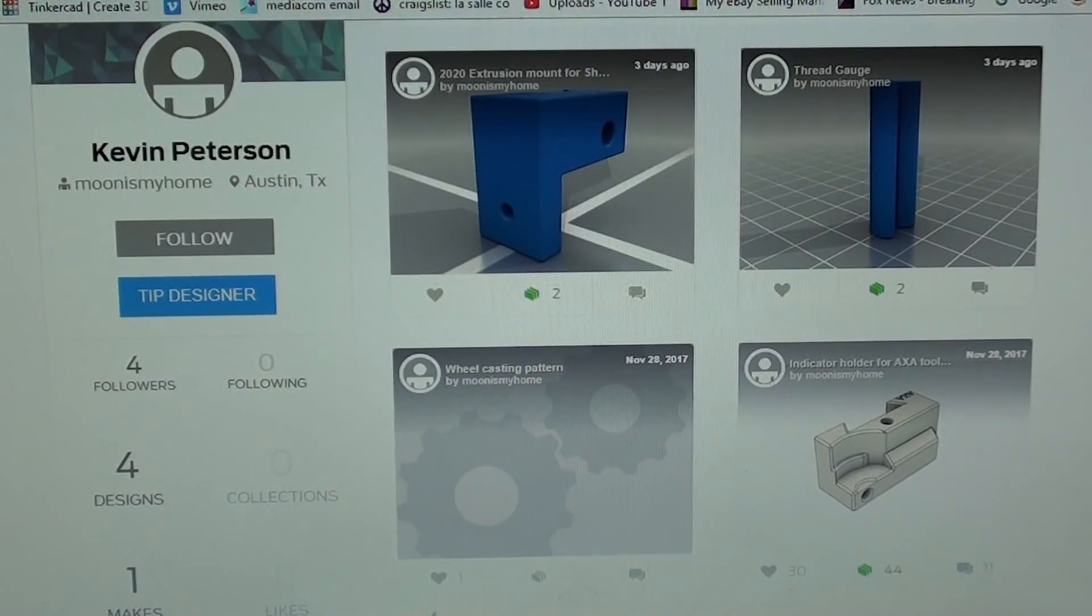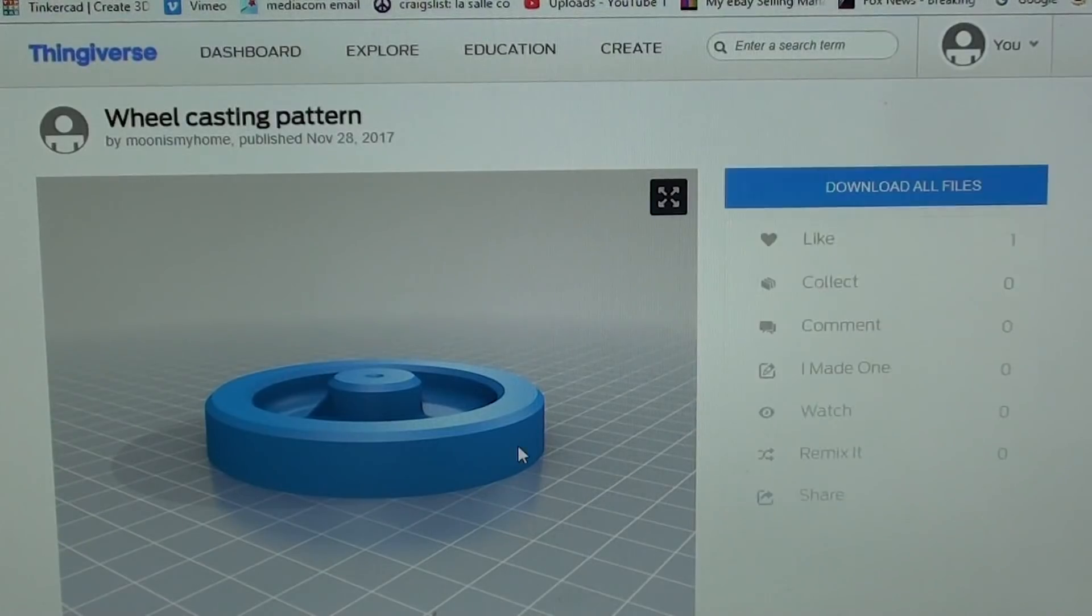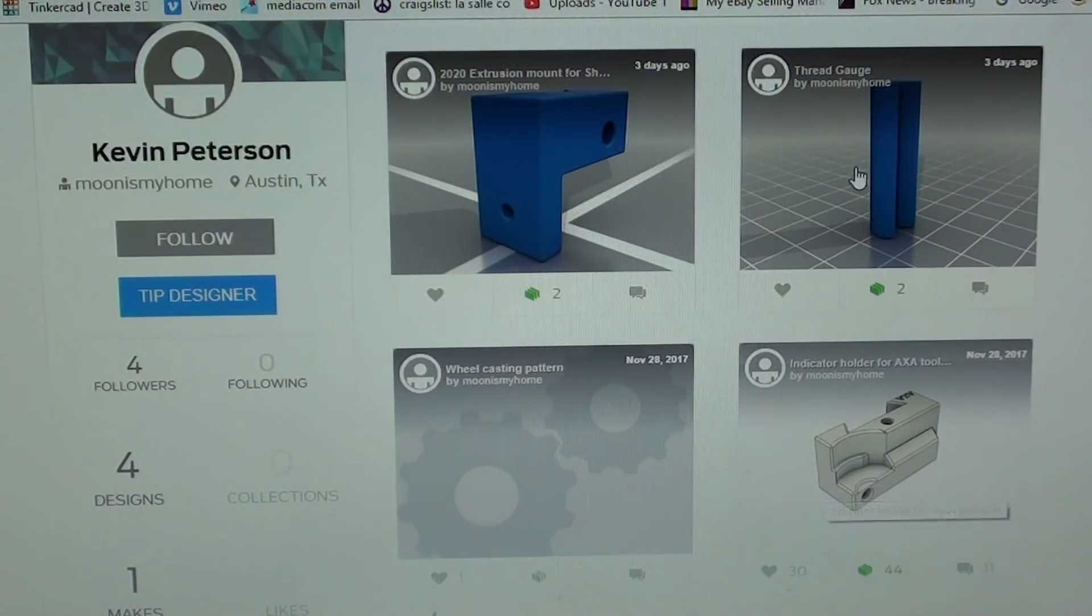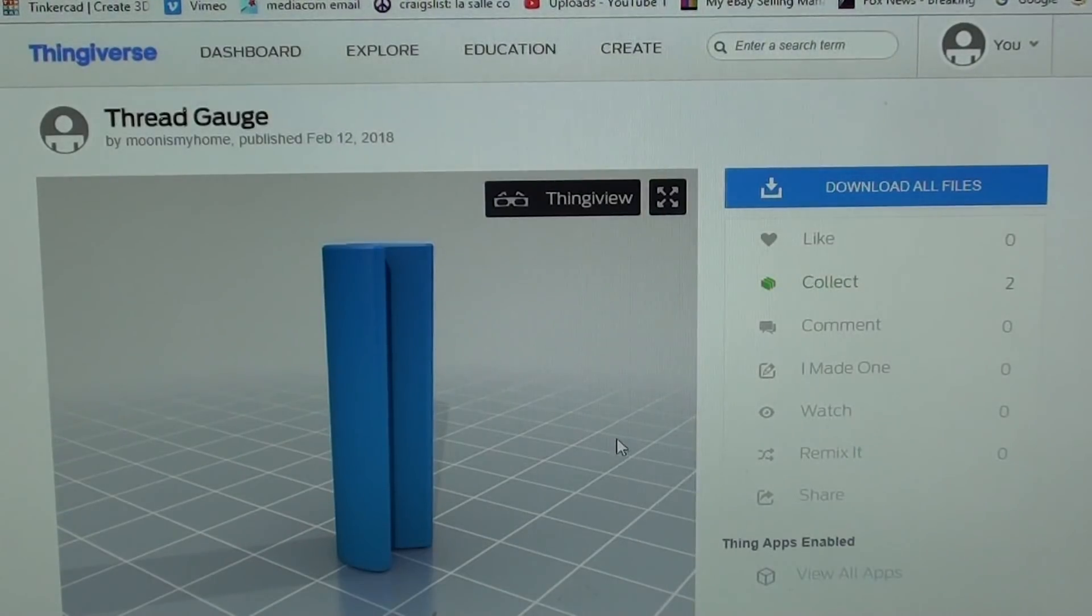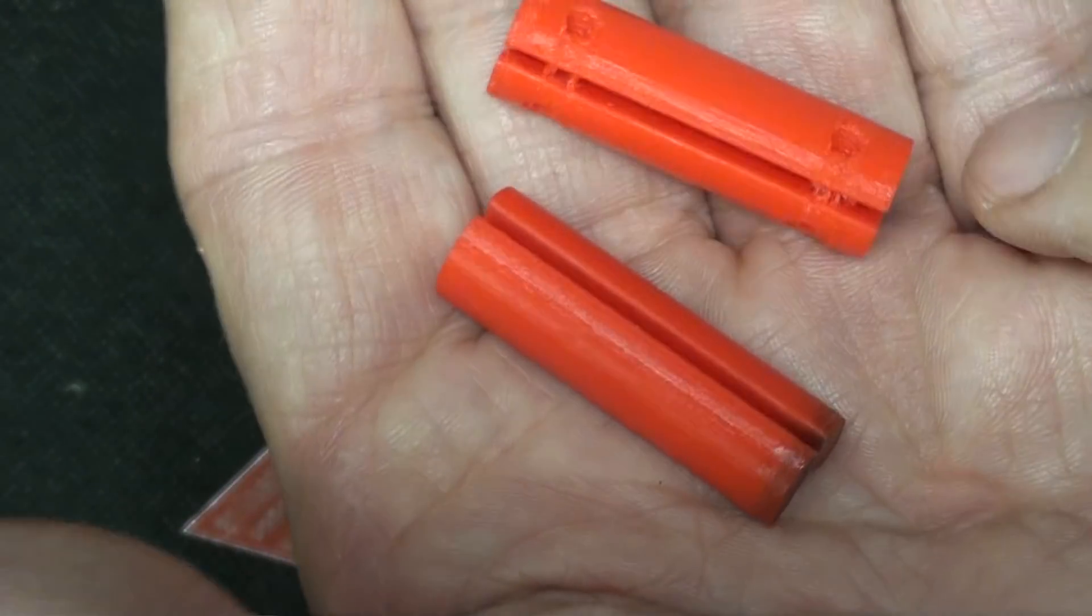I'm back on the computer, and this is Thingiverse. In order to find the thread gauge, just do a search for thread gauge or for Kevin Peterson, Moon Is My Home. Here you can see where there are several of his creations. There's the wheel casting that he made for me, the indicator holder, and here is the thread gauge which is what we're really talking about here. In two versions: there's the one with the holes, there's the one without the holes. You can download both of them at the same time.